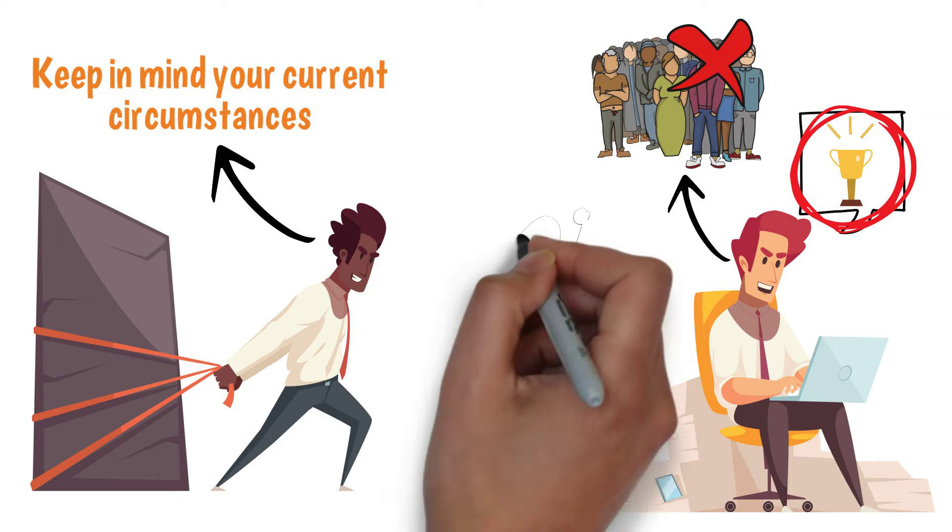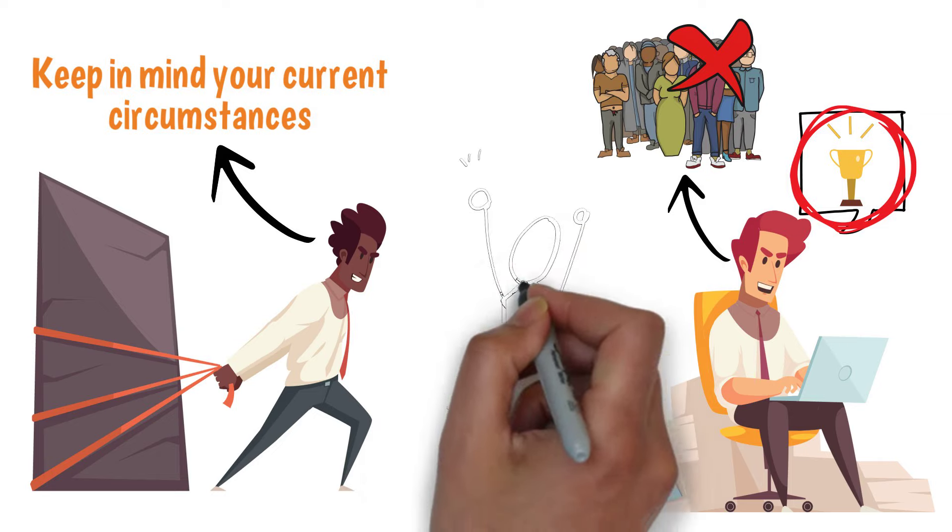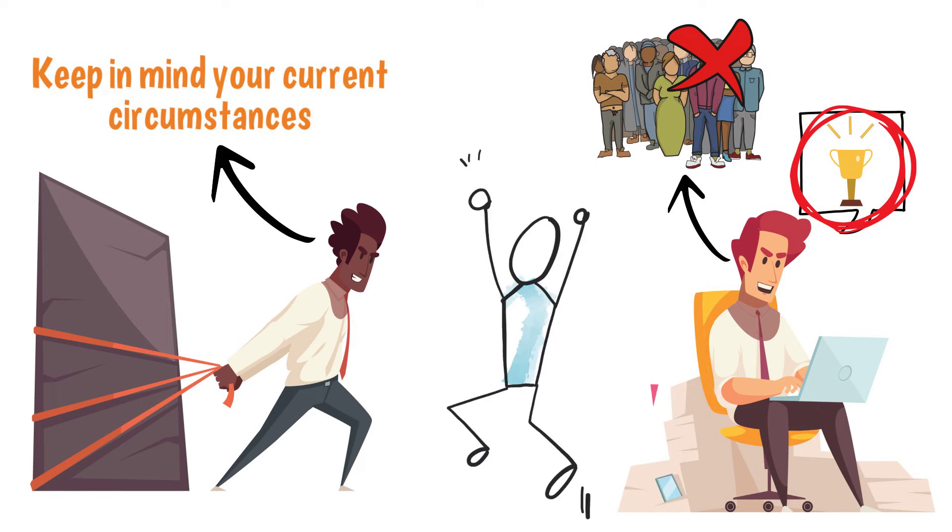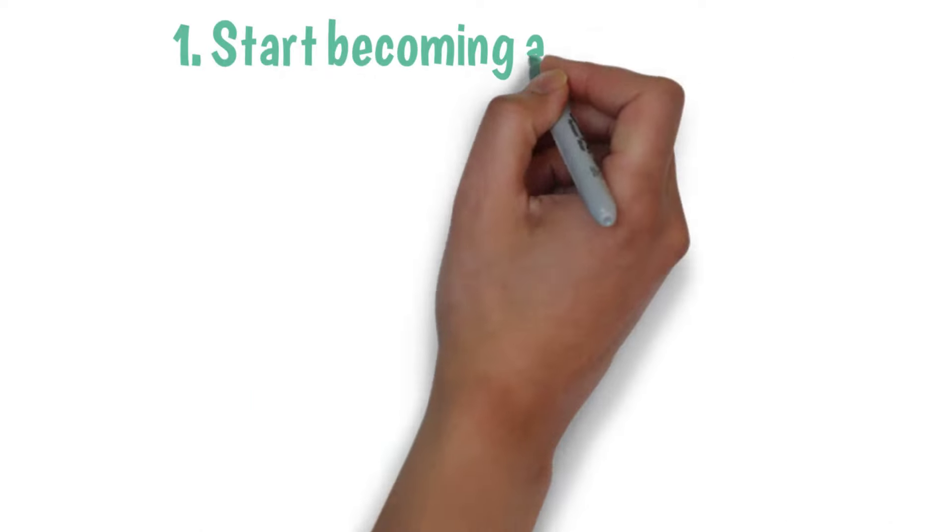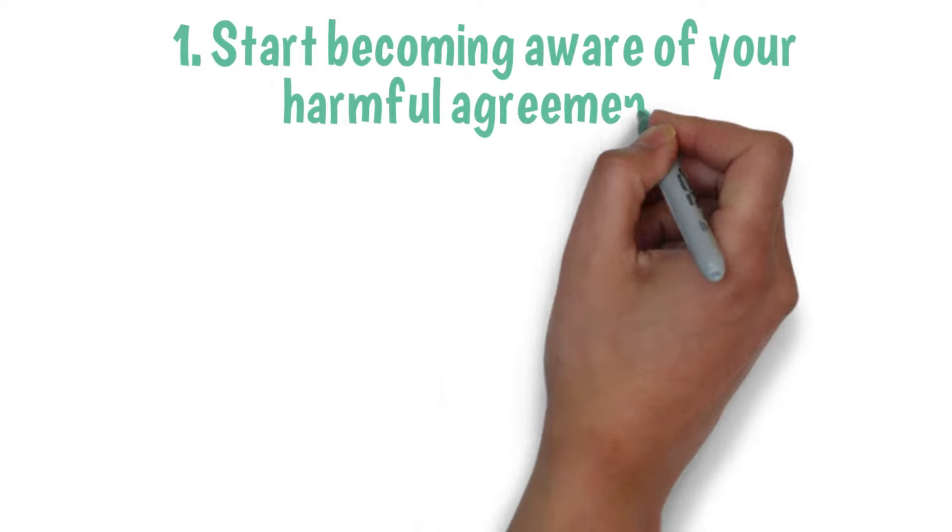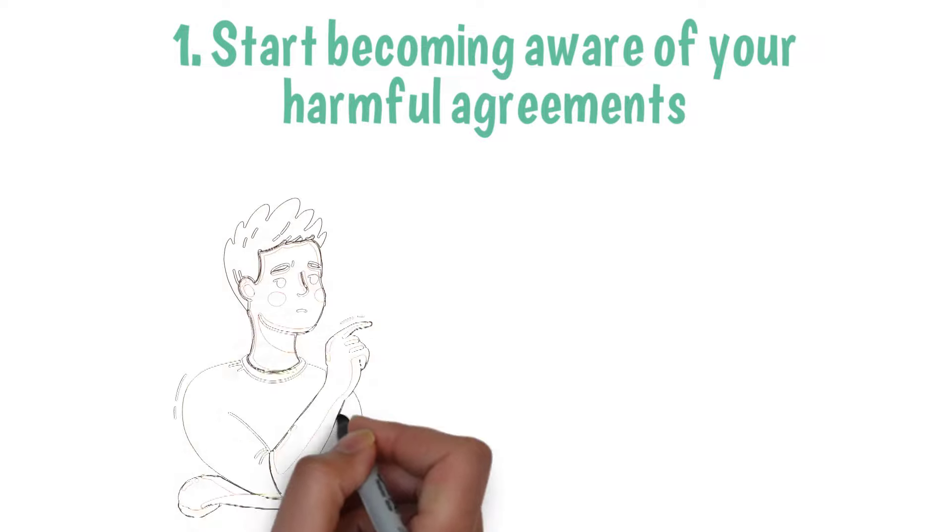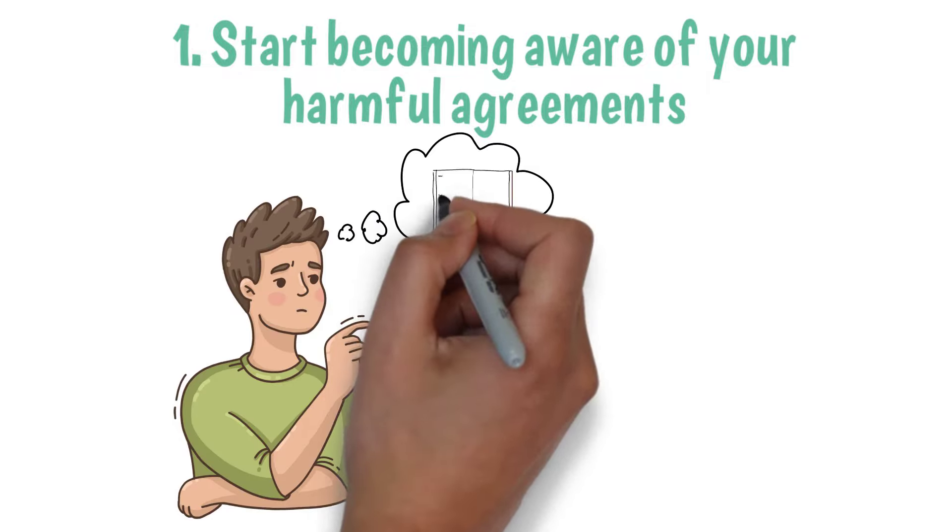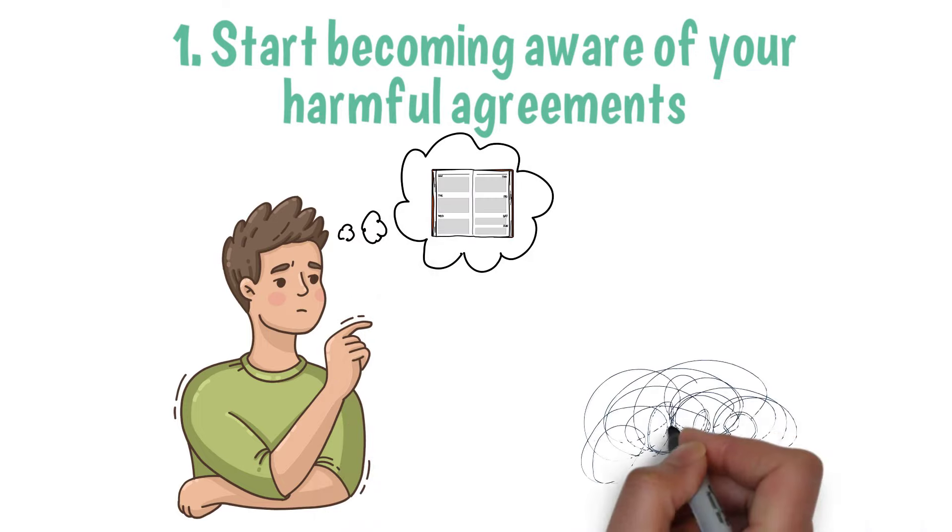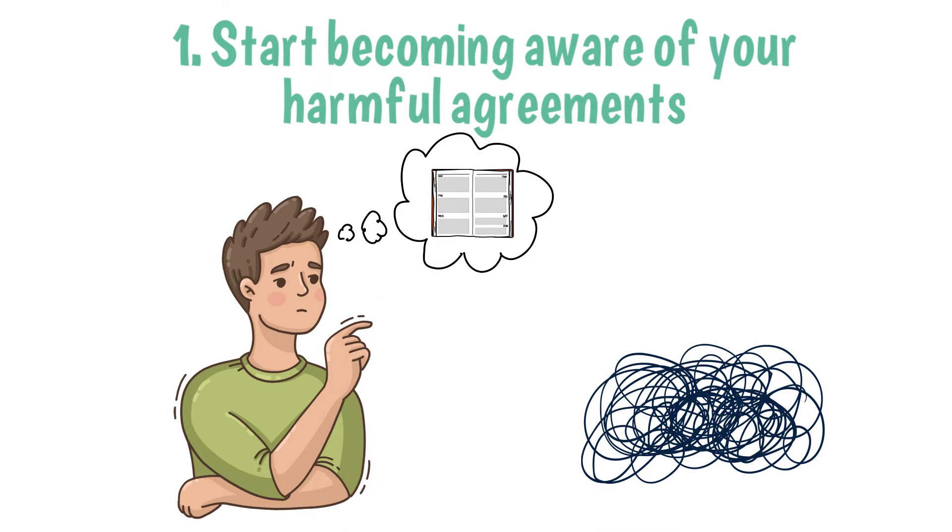To live up to these four agreements, you need to free yourself of the old harmful agreements that society has imposed on us. There are three easy ways to do so. One, start becoming aware of your harmful agreements. Everyone suffers from them, sometimes without even knowing it. It's important to turn on that self-reflection and become aware of the beliefs you have that limit your potential in life.